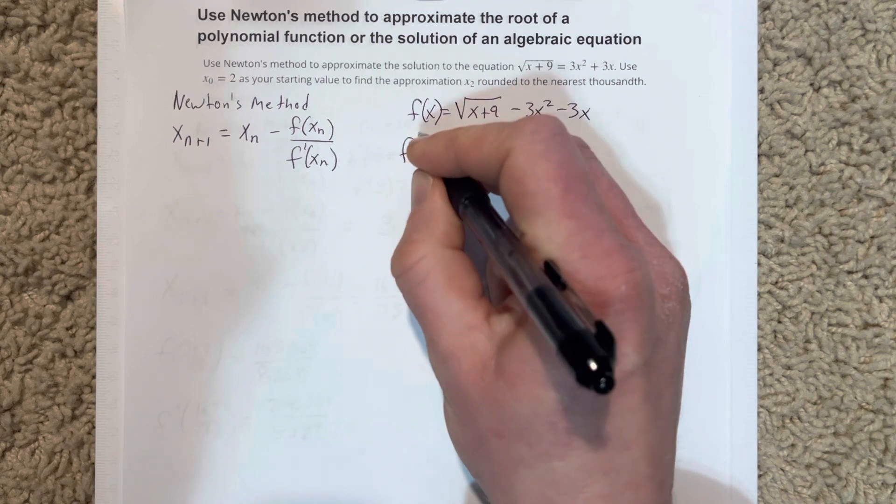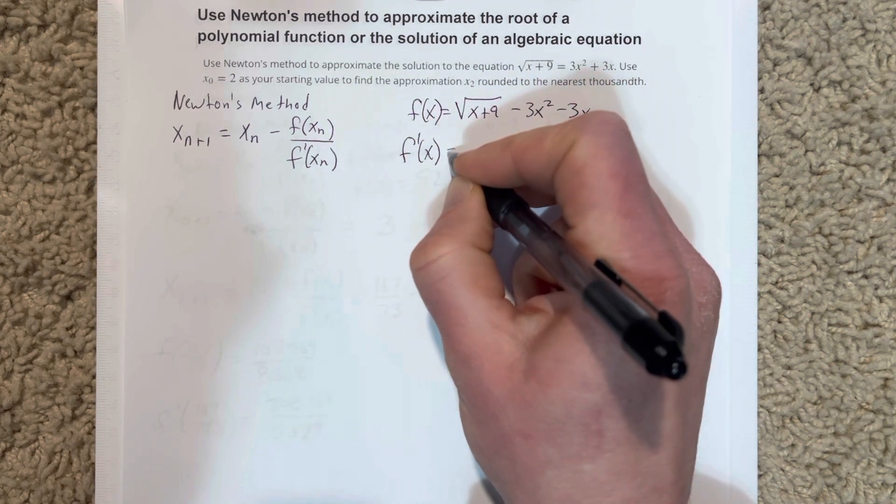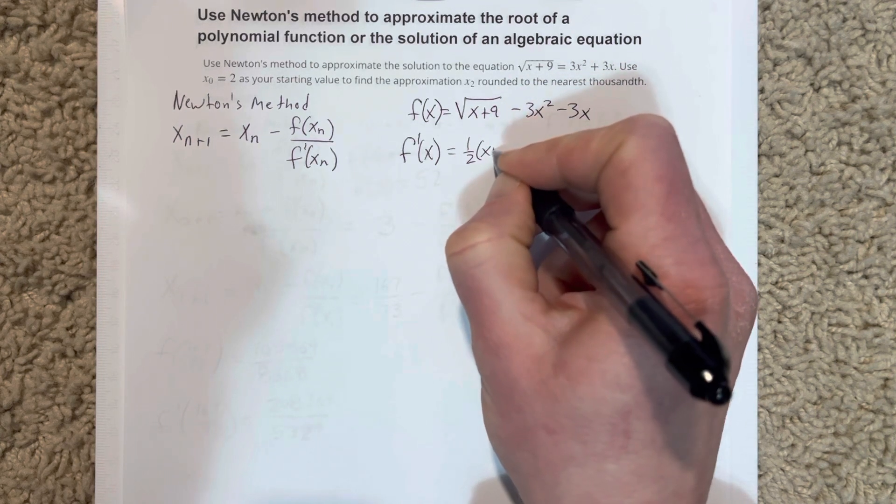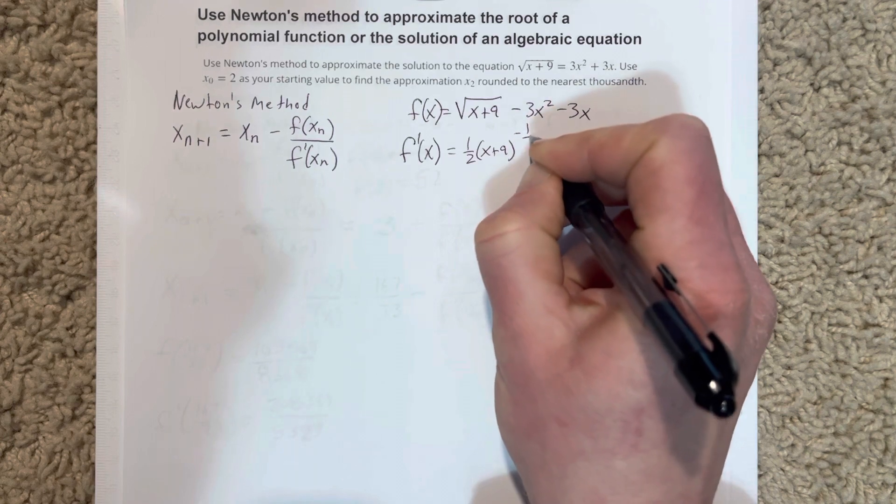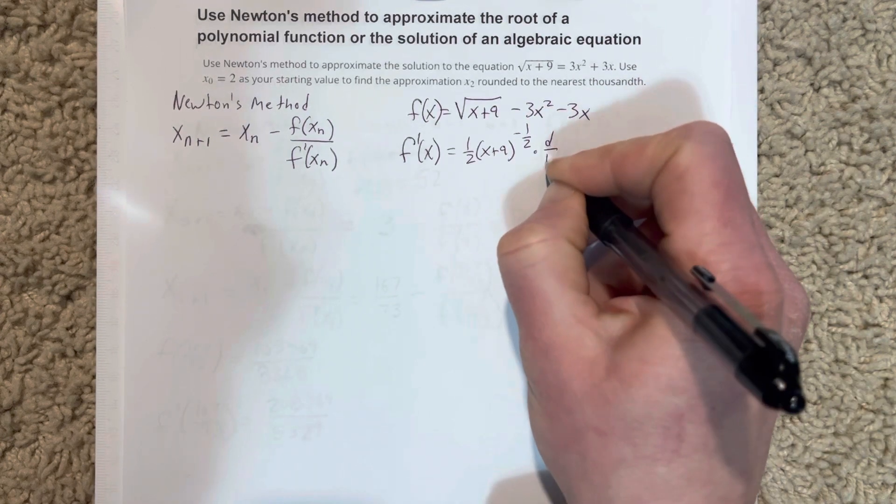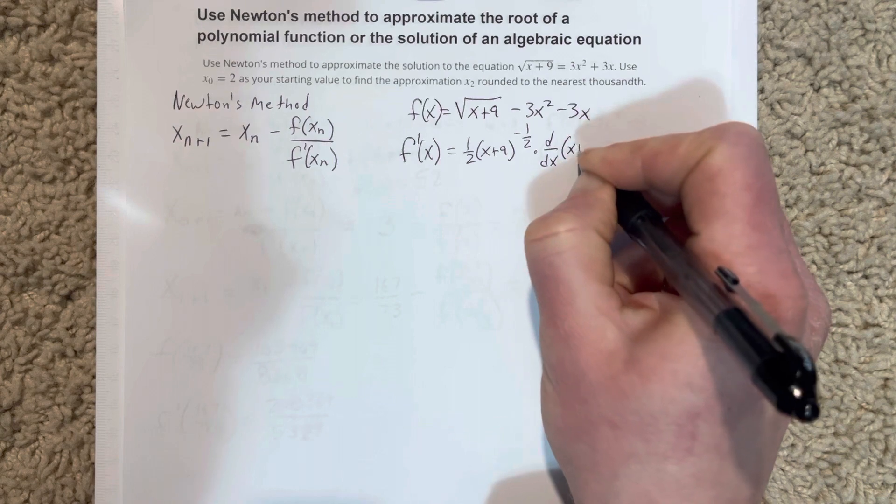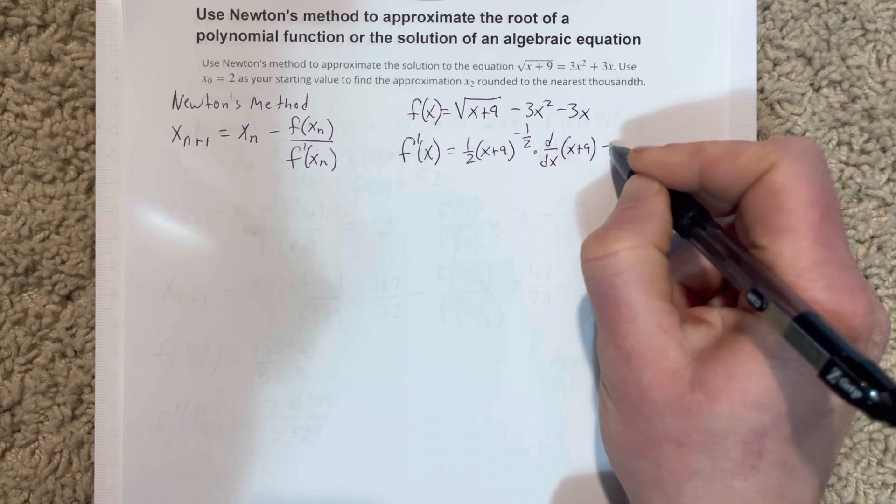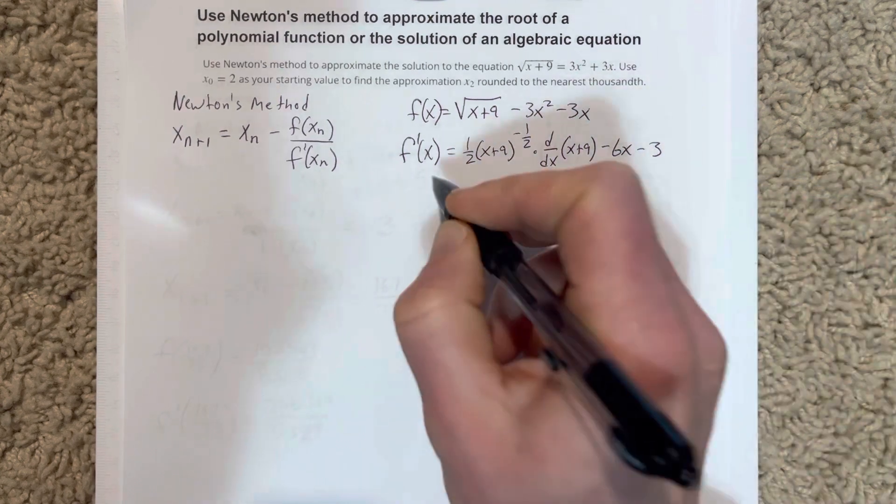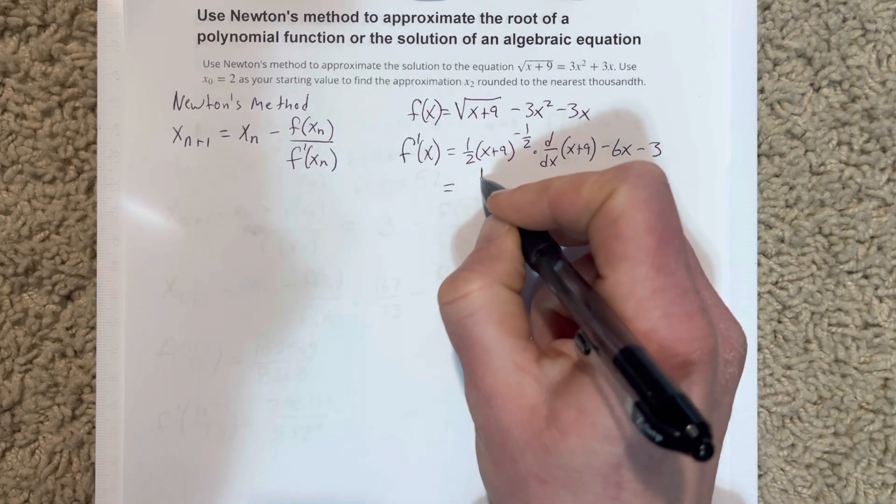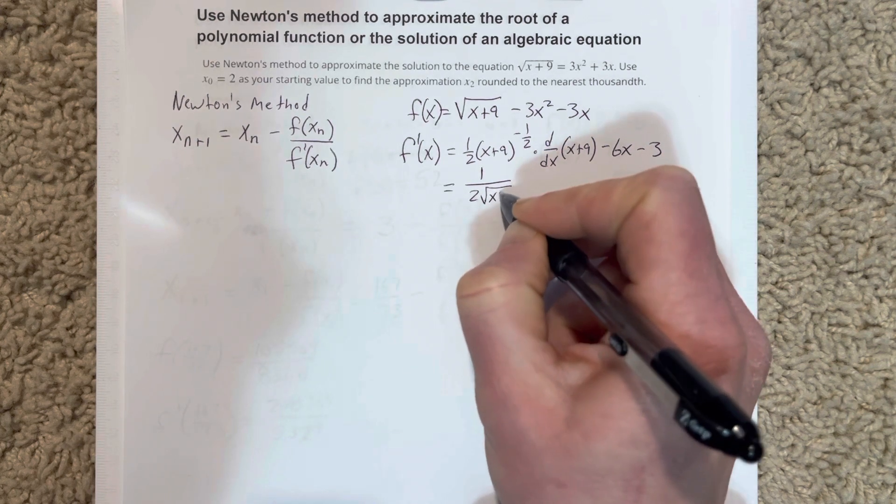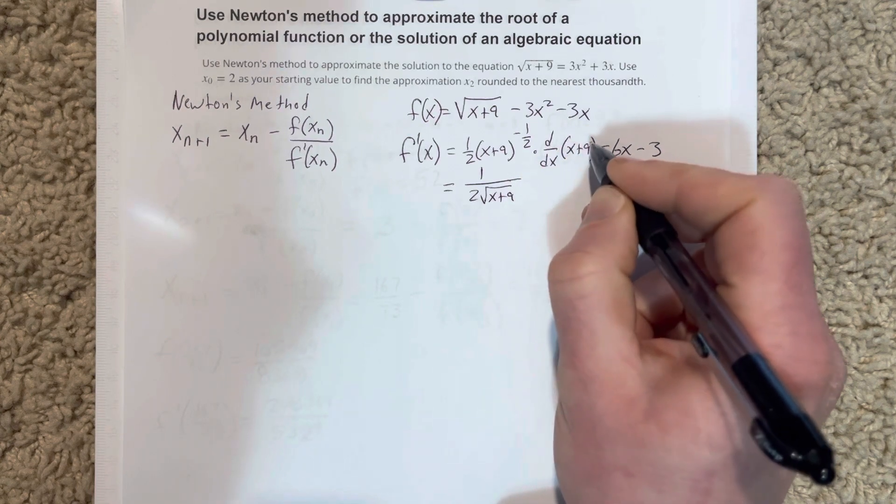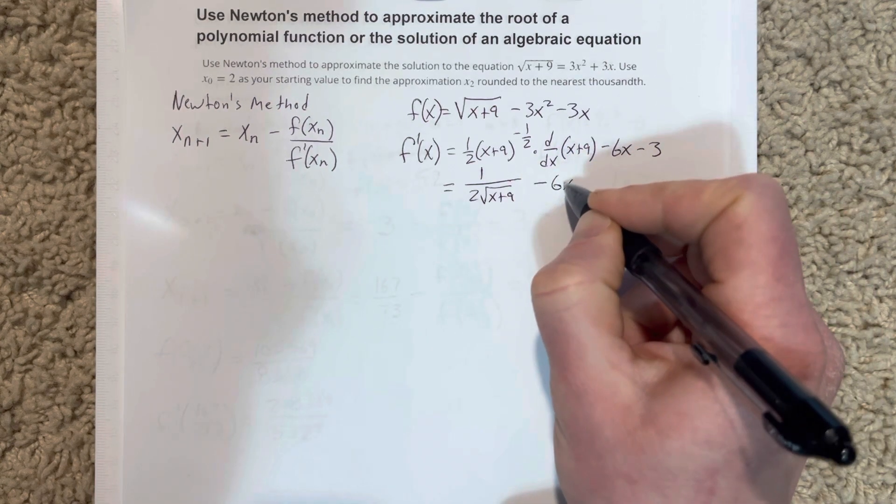Now f prime of x is equal to x plus 9 to the negative 1/2 times the derivative of x plus 9 and then minus 6x minus 3. If I simplify that, that'd be 1 over 2 root x plus 9. The derivative of x plus 9 is just 1 so that didn't do anything. So I have minus 6x minus 3.